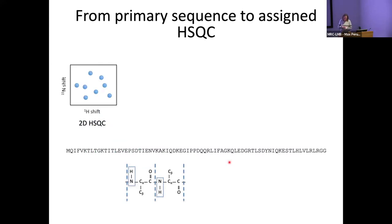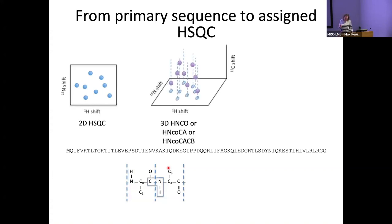How do we do that assignment? Briefly, here's our 2D 15N HSQC — you get one cross peak for every proton-bound nitrogen of the backbone. You don't get a cross peak for prolines because they don't have a backbone proton. We typically collect three pairs of triple resonance experiments: the first three are called the HNCO, HNCOCA, and HNCOCACB, and they give you a third carbon dimension. The HNCO gives a cross peak correlating the 15N nitrogen with its proton and the preceding carbonyl, carbon alpha, and carbon beta.